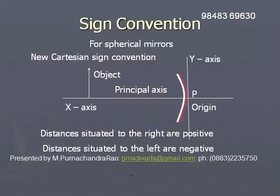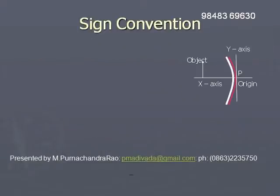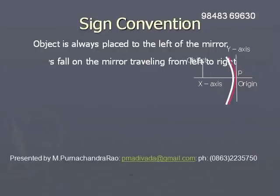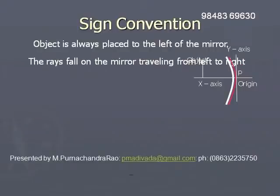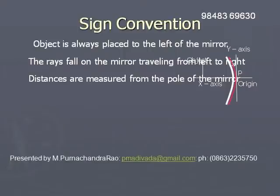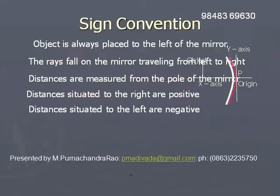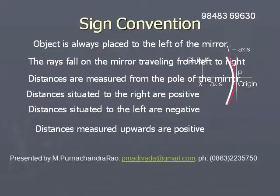Distances to the right of the origin are taken as positive, and distances to the left are taken as negative. The object is always placed to the left of the mirror.